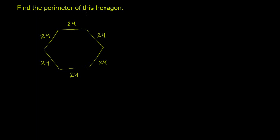Find the perimeter of this hexagon. So the perimeter just means the distance around the object, or if you add up all of the lengths of the sides of the object, we're going to add up all of the lengths of sides of this hexagon.